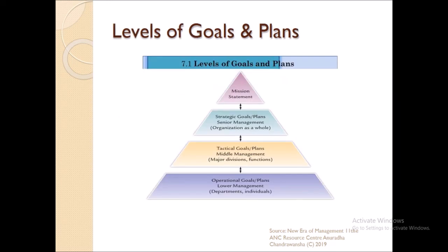There are different levels of management: top management, middle management, and lower-level or frontline management. When it comes to planning and goal setting, there are four types of plans implemented in organizations. At the top you have the vision — the ultimate objective — and the mission statement you implement right now. The two upper levels are called the senior managerial or strategic level.